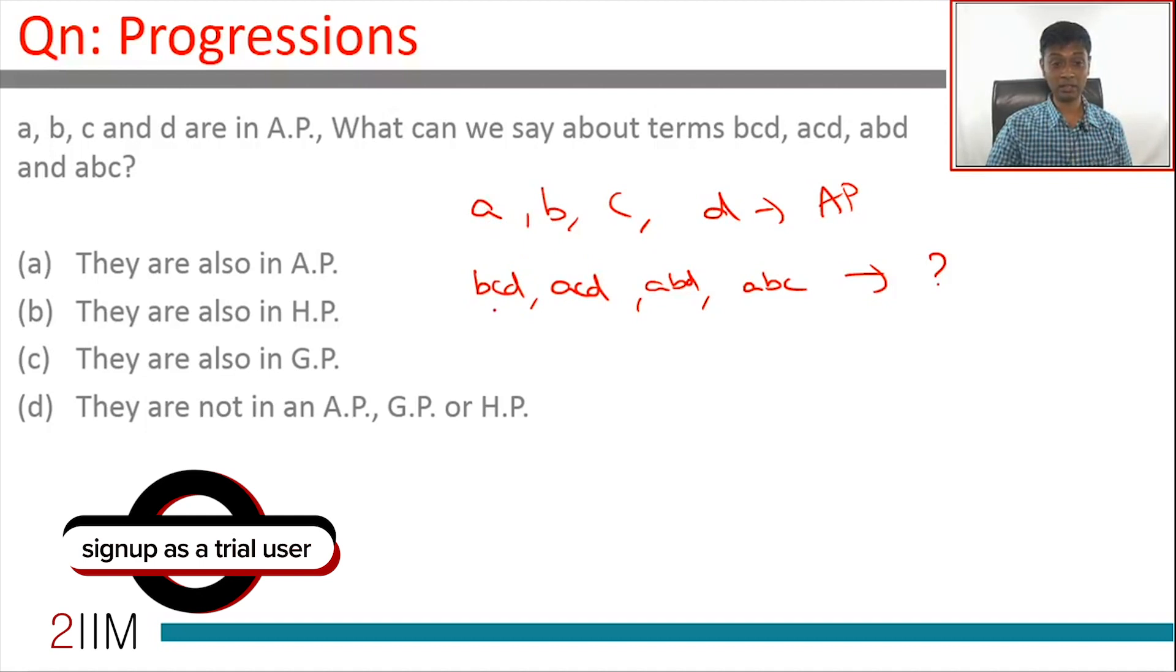We have bcd, acd, abd, and abc. The other three variables are used in each term, so we have to somehow link these up.